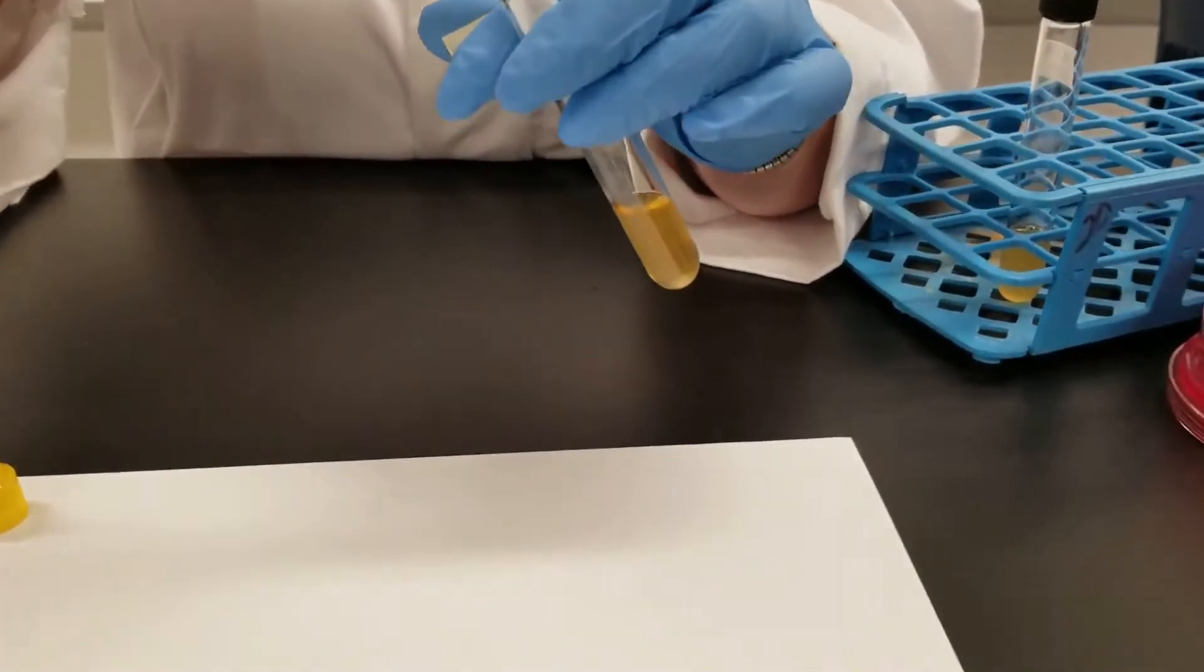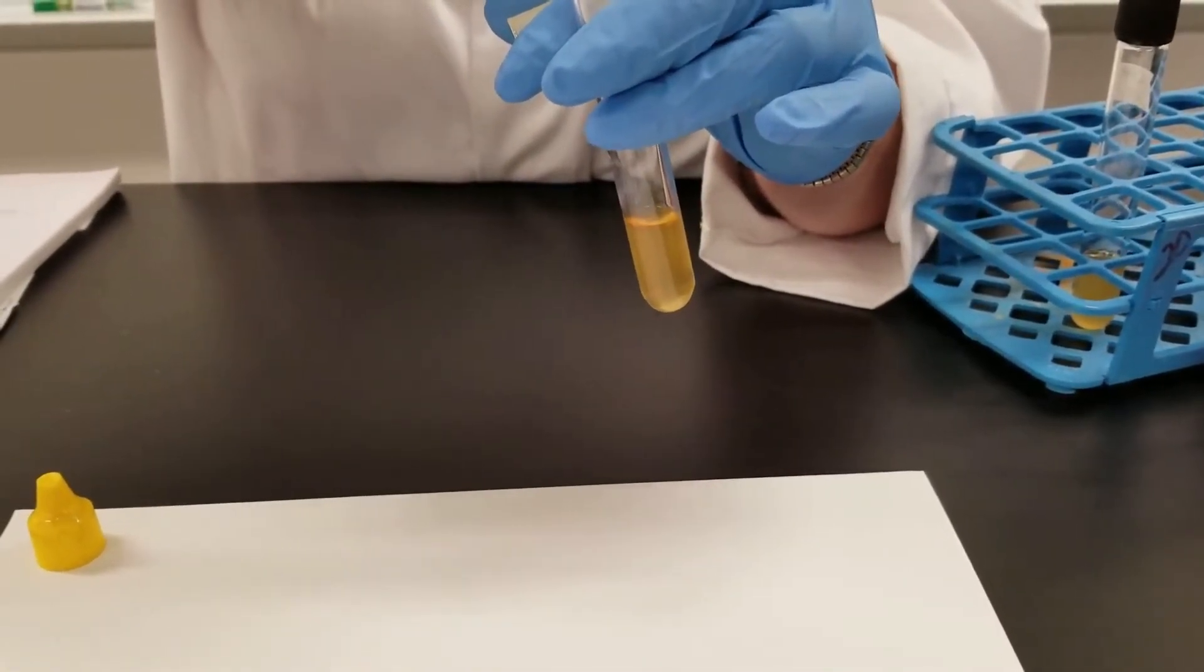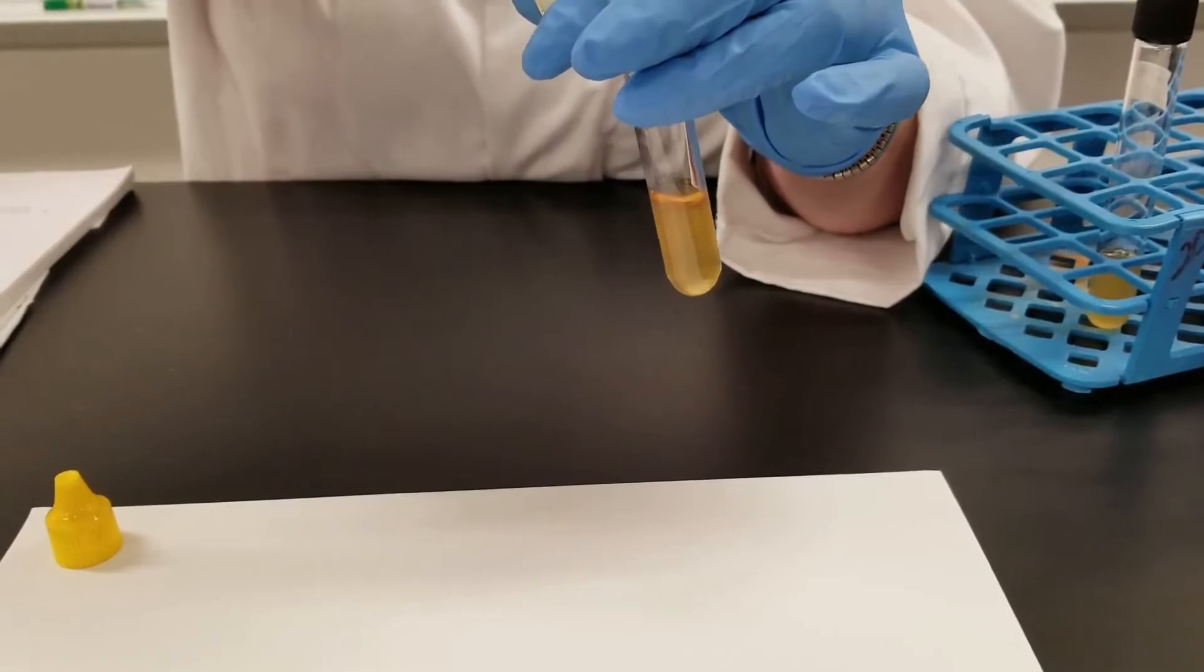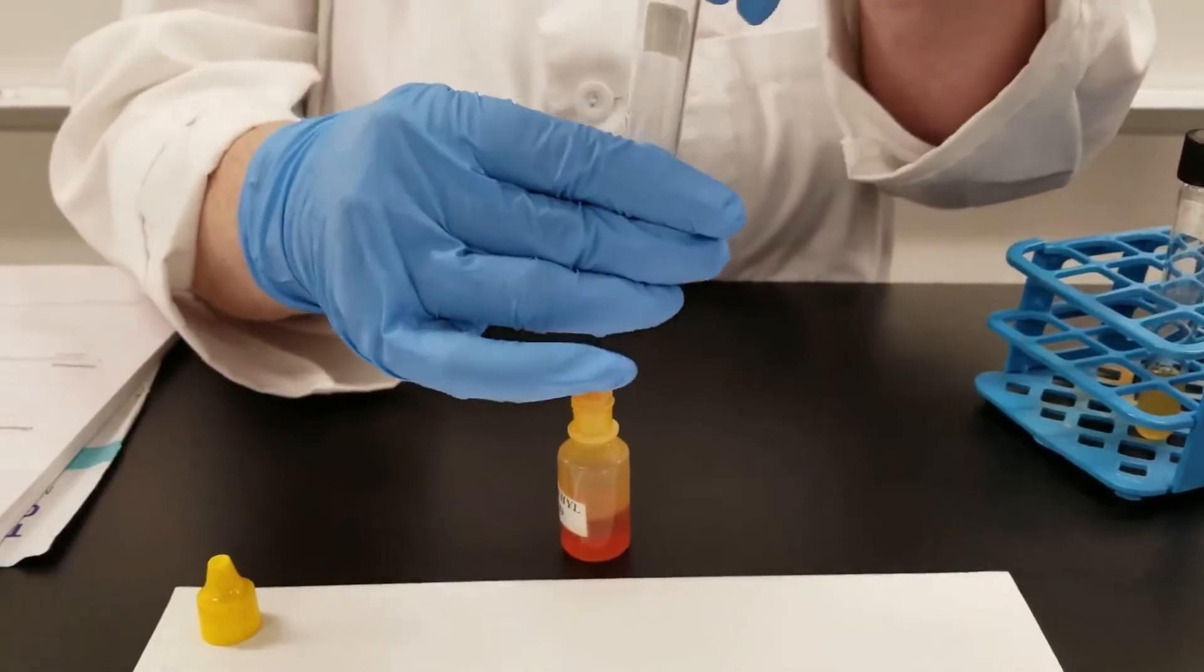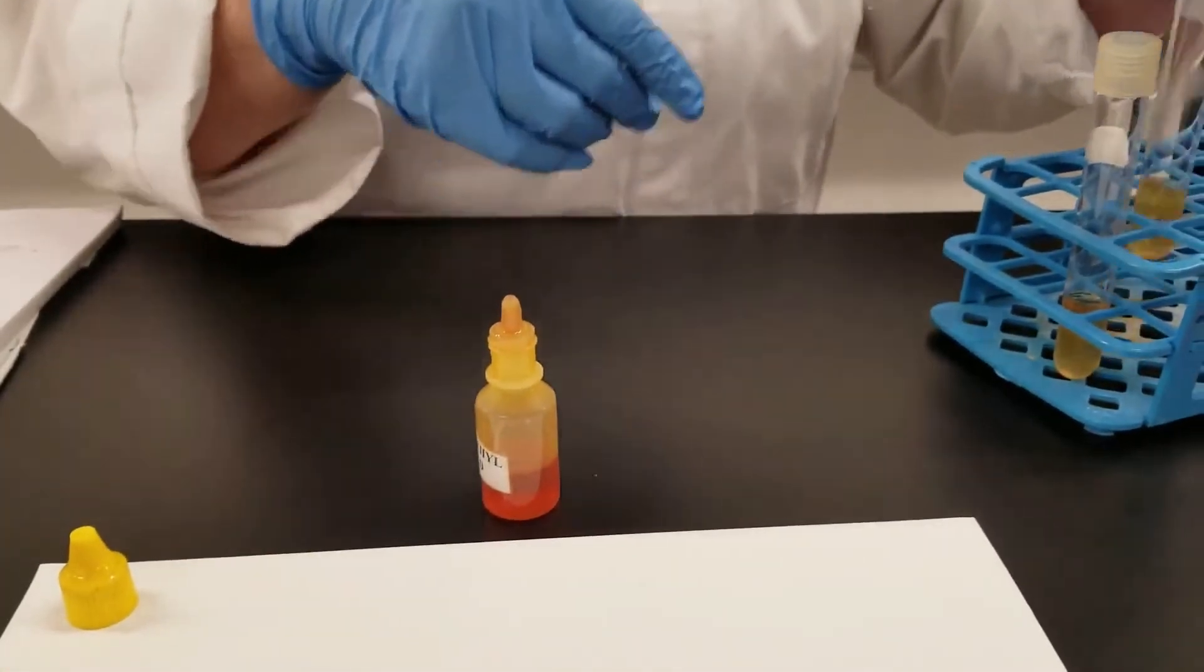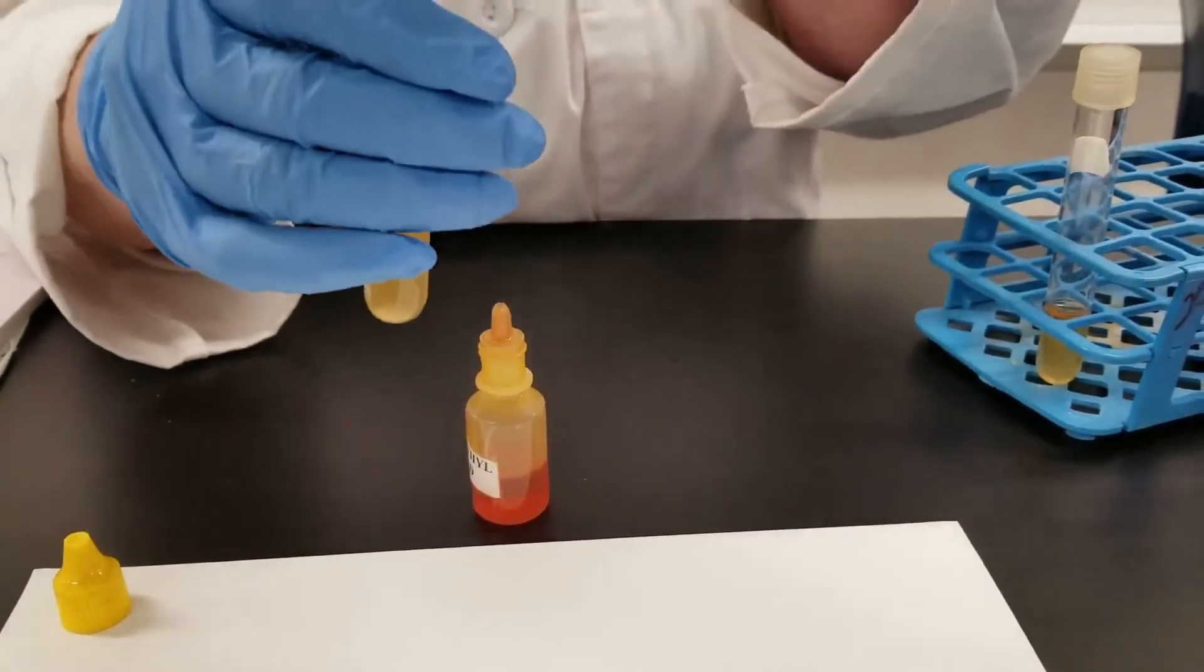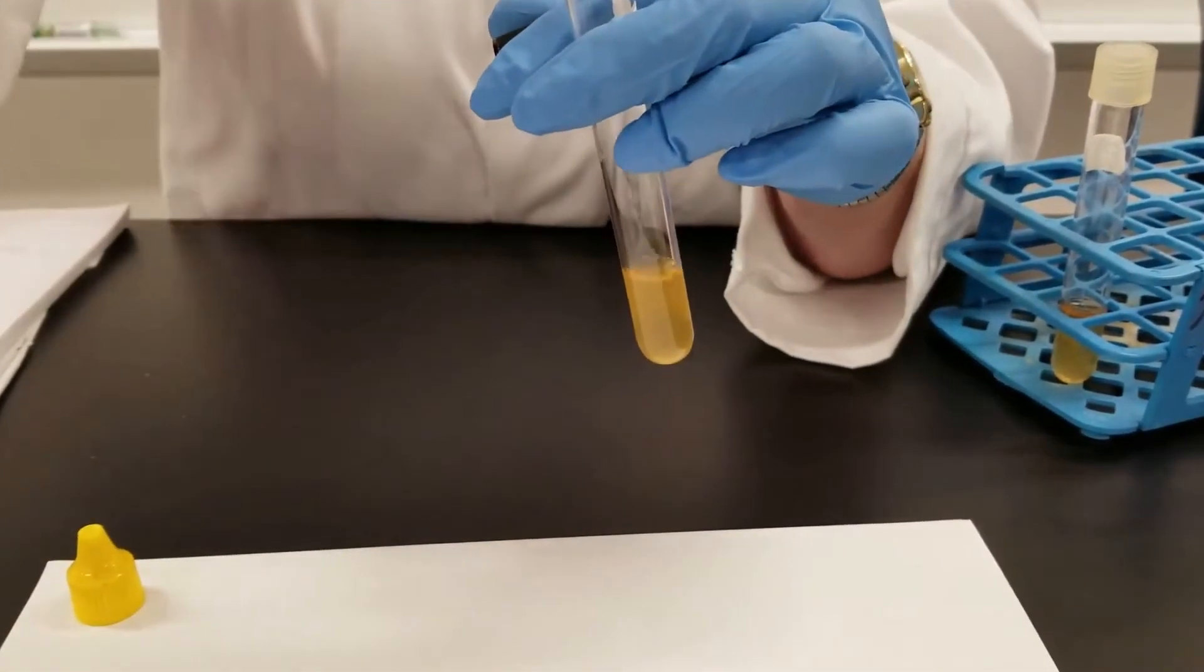We add five drops of the methyl red. We will let this sit for a moment, and then to the other tube, which is Enterobacter aerogenes, we are adding five drops of methyl red to it as well.